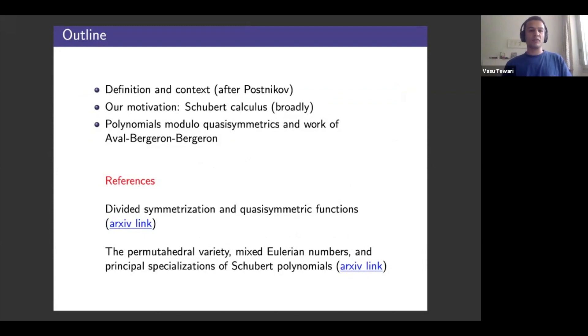So I'm going to be reporting on some work joint with Philippe Nadeau at Lyon. So here's a quick outline of the talk. I'll begin by providing the definition of divided symmetrization and context following Postnikov's work on permutohedra volumes and lattice points therein. I'll move on to briefly describe our motivation which was a question in Schubert calculus and finally I'll relate all of this to some work of Aval Bergeron Bergeron studying the polynomial ring modulo the ideal of quasi-symmetric polynomials.